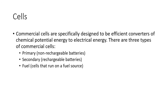Commercial cells — the batteries you buy and use in electrical devices, especially mobile electrical devices — are designed to be efficient converters of chemical potential energy to electrical energy. There are three major types: primary cells, secondary cells, and fuel cells. Primary cells are non-rechargeable, secondary cells are rechargeable, and fuel cells are cells that run on a fuel source.